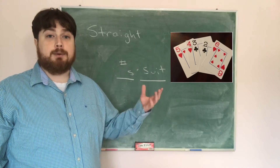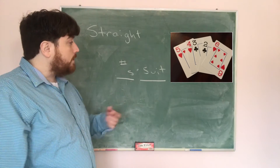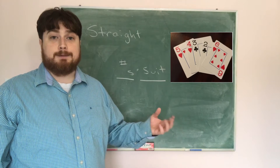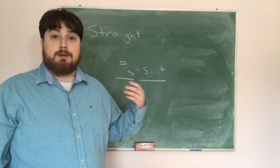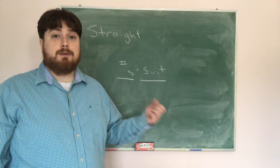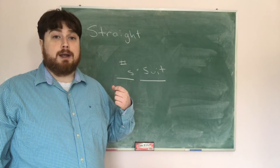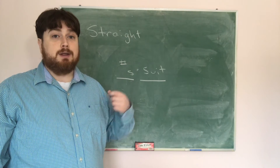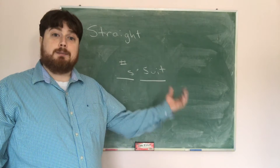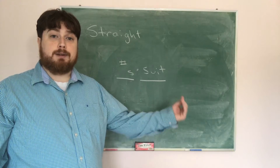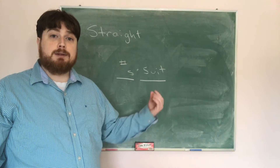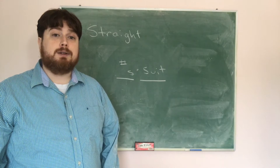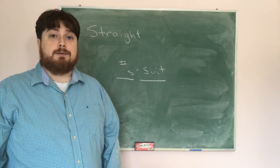A straight means five cards in a row numerically, and the cards can be any suit. For example: two, three, four, five, six; or ace, two, three, four, five; or nine, ten, jack, queen, king; or ten, jack, queen, king, ace. The ace can be treated as both high and low when counting straights.